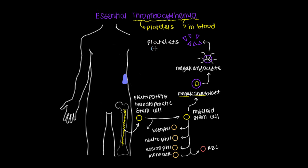Platelets are for our clotting system — they make sure we don't bleed out when we sustain an injury. For example, if we get poked or stabbed and start bleeding, our platelets will come over and start aggregating, forming the early parts of a clot that helps close off the wound and stop the bleeding.